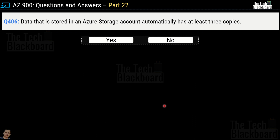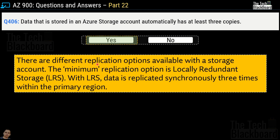Question number 406: data stored in an Azure storage account automatically has at least three copies — yes or no? This is a true statement. There are different replication options within an Azure storage account. The minimum replication option is locally redundant storage (LRS), and within LRS, data is replicated synchronously three times within the primary region. So even with the minimum option, you still have three copies.